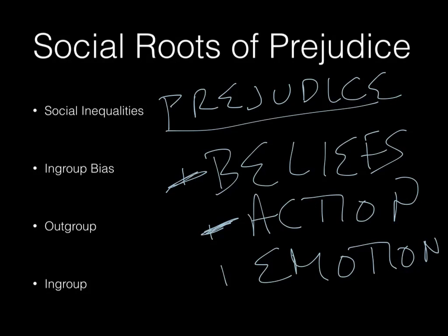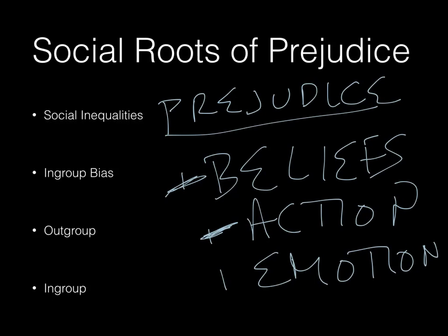An example would be overweight or obese people. If you believe that obese people are gluttonous, and you feel dislike for obese people, and then you treat obese people with contempt or badly, that would be an example of prejudice. You have to have those three things together in order for prejudice to occur.